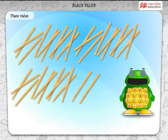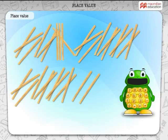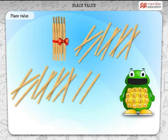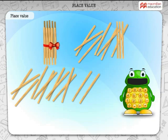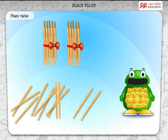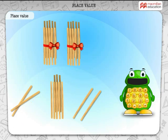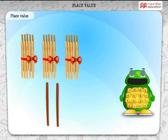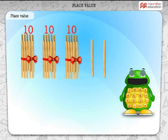Arrange the sticks in bundles of tens like this: 1, 2, 3, 4, 5, 6, 7, 8, 9, 10. After bundling, you see that some are left over. Each bundle is a 10, and each of the sticks left over is a 1.